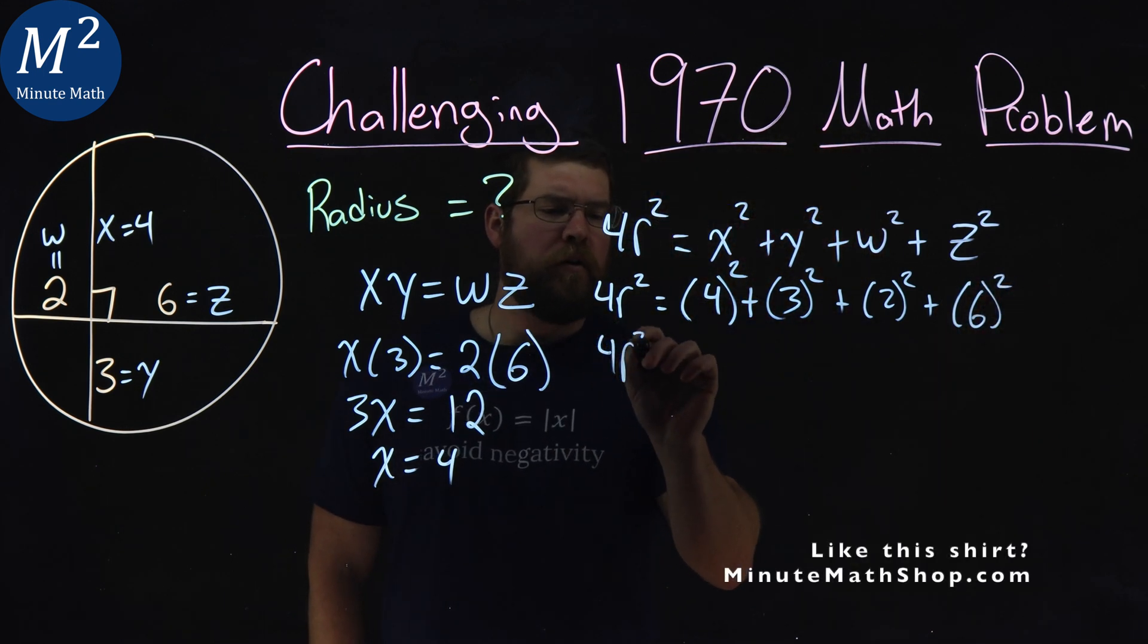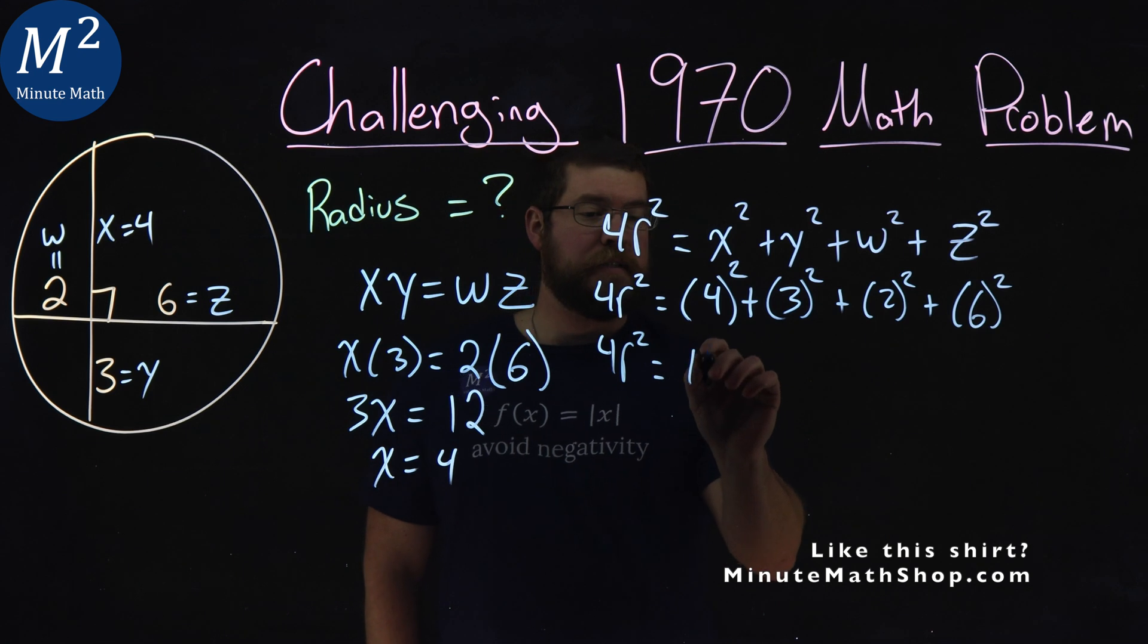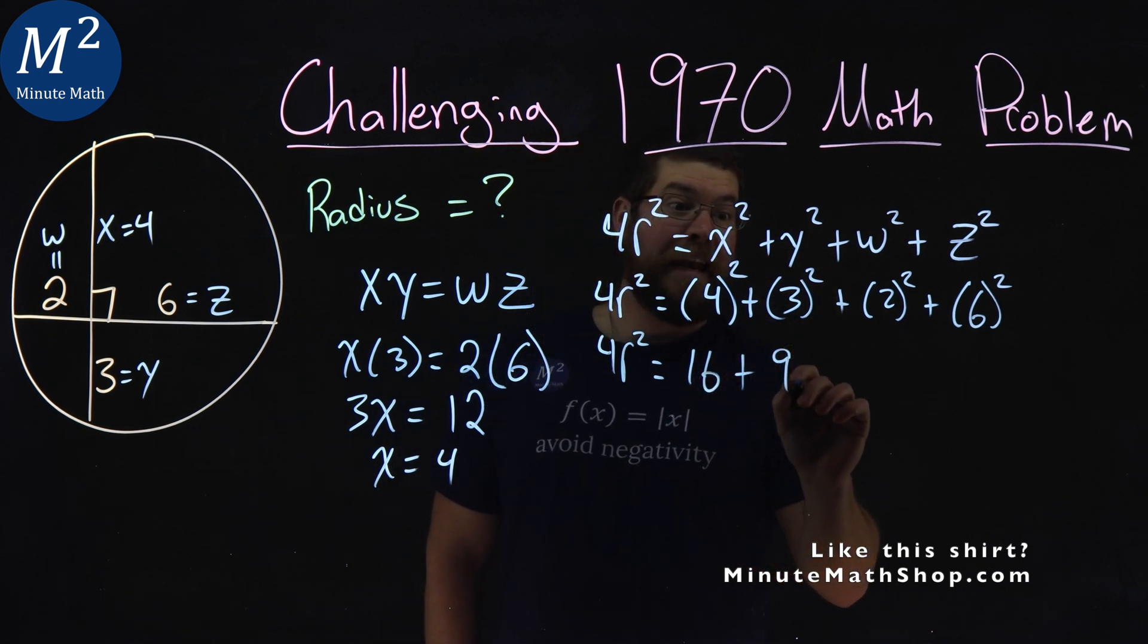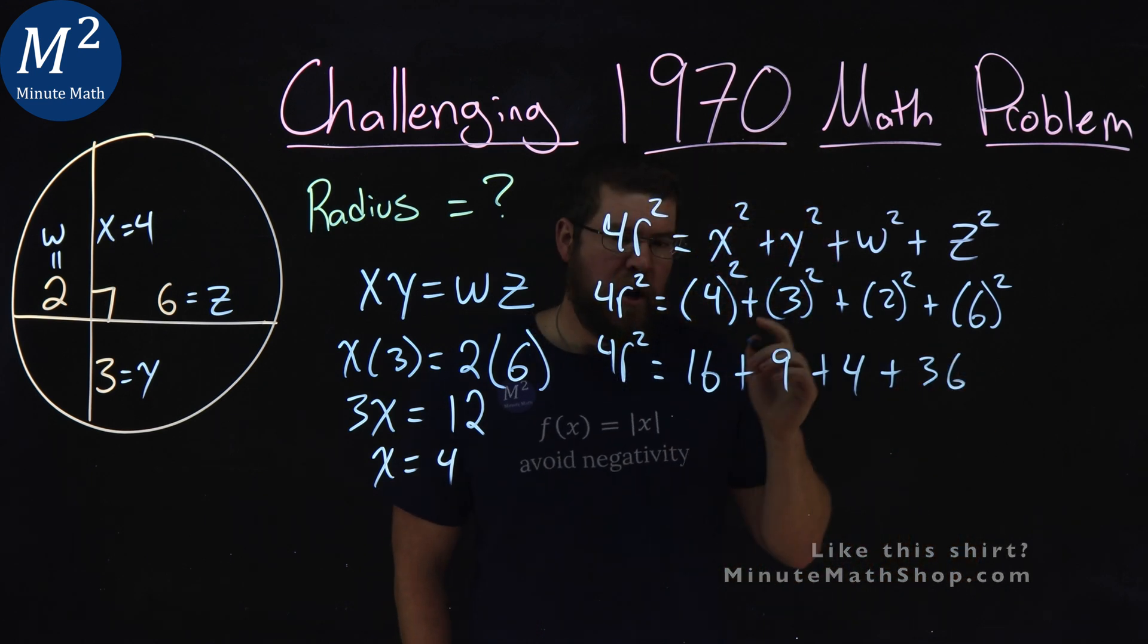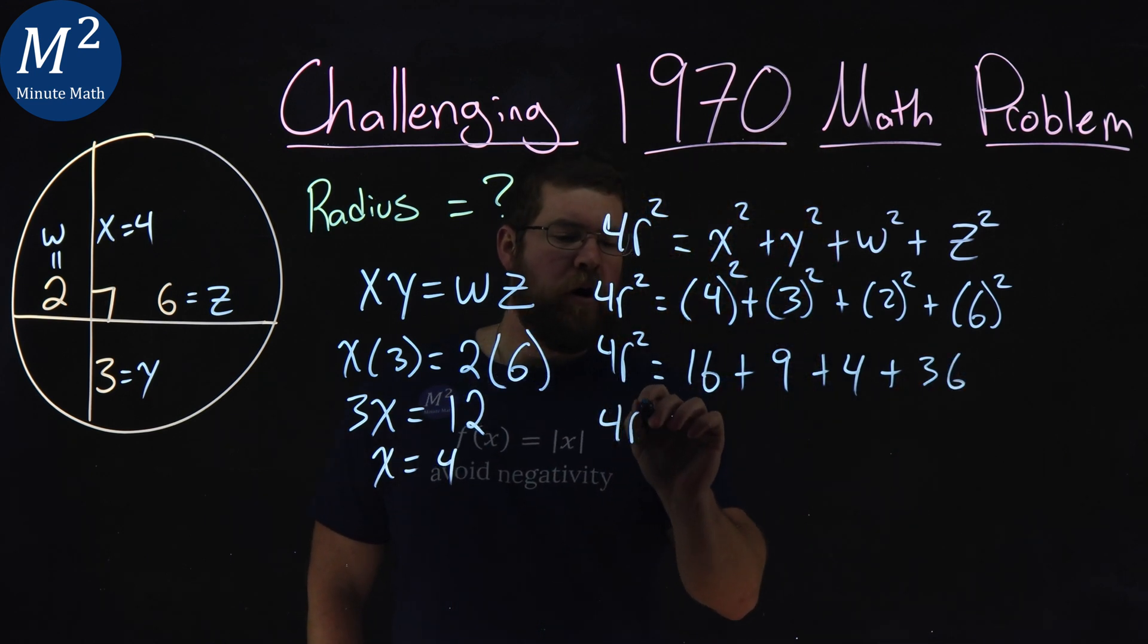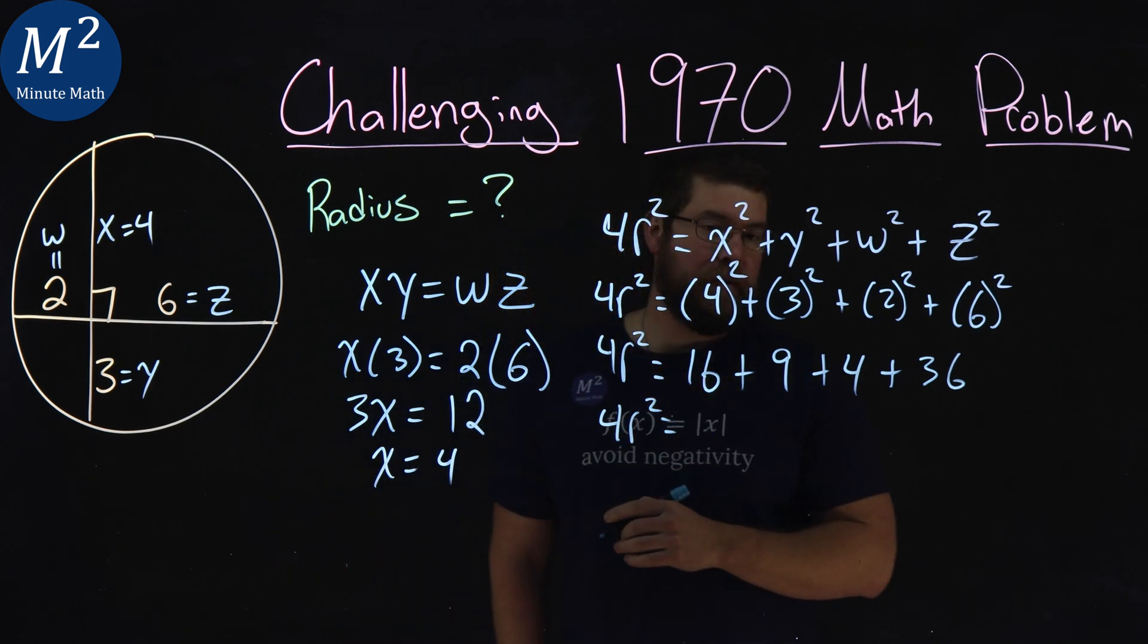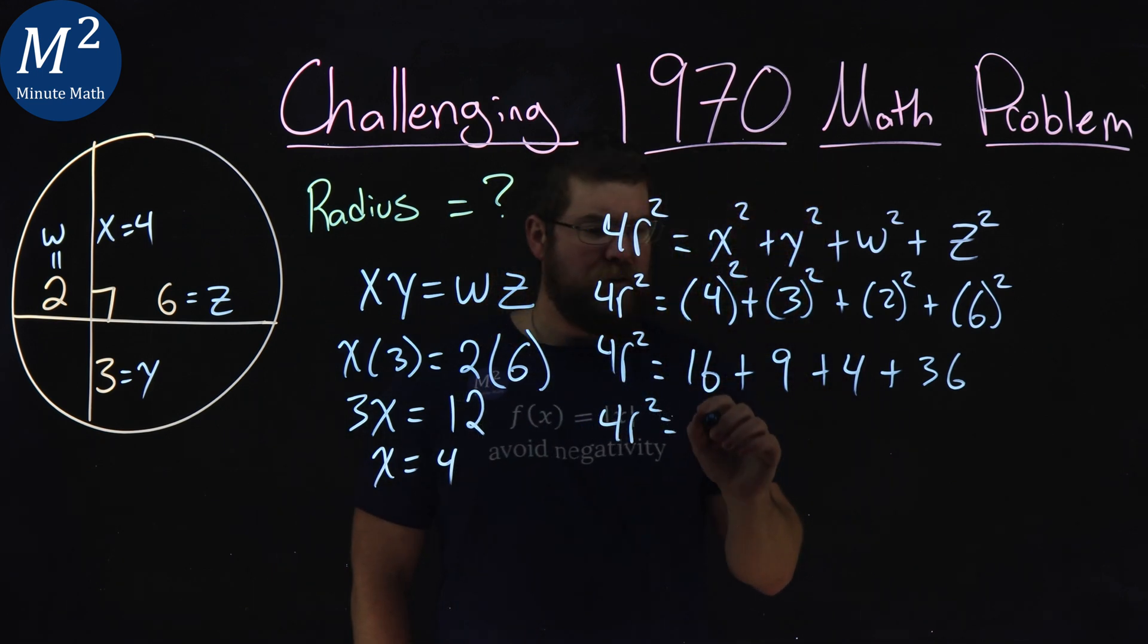So then we have 4r squared here is equal to 4 squared, 16, plus 3 squared, 9, plus 2 squared, 4, plus 6 squared, 36. We add all of them up, and we have 4r squared is equal to 16 plus 9 plus 4 plus 36 is a good old 65.